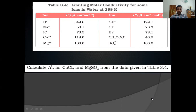In this table you can see the molar conductivity at infinite dilution of some ions — some positive ions and some negative ions. What will be the molar conductance of H₂O? We know H₂O dissociates as H⁺ and OH⁻, so molar conductance of H₂O at infinite dilution equals molar conductance of H⁺ plus molar conductance of OH⁻, which is 349.6 plus 199.1. These two values are given on the top.